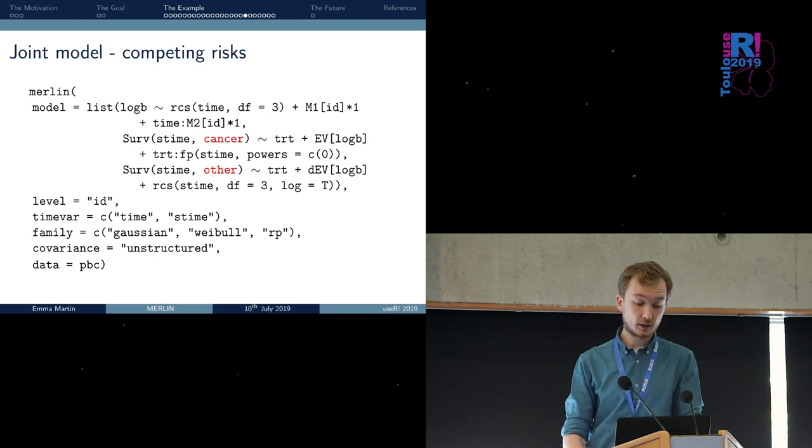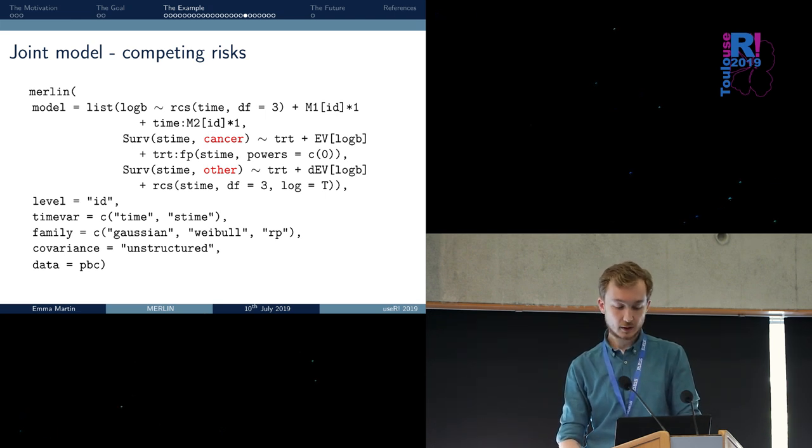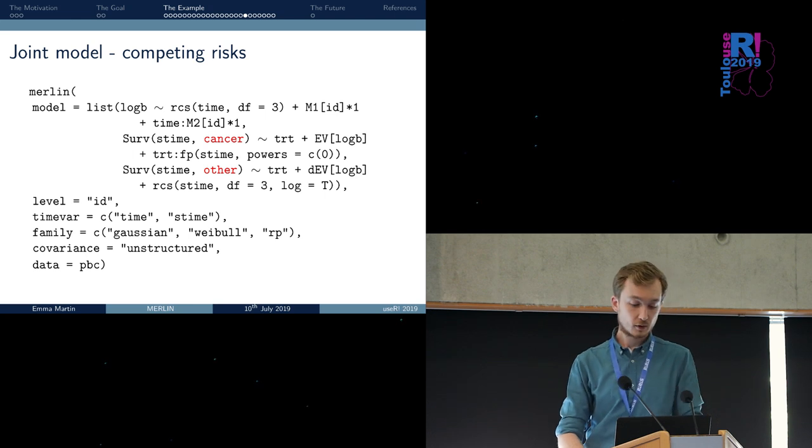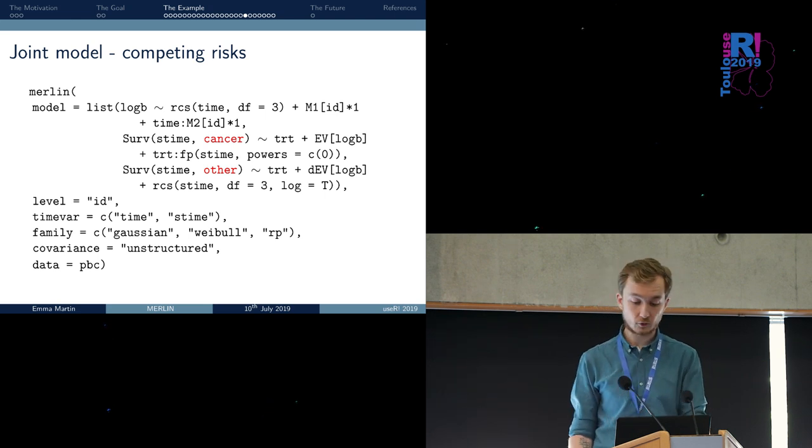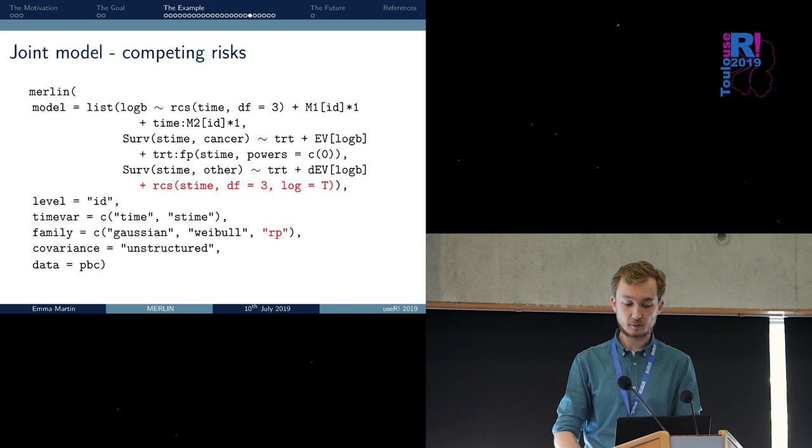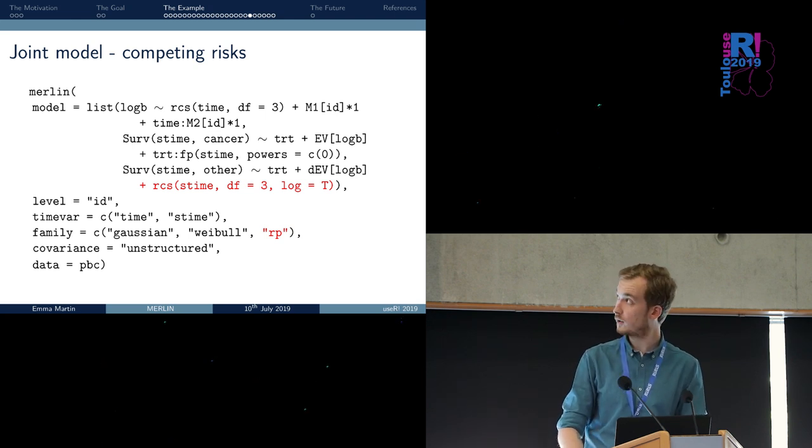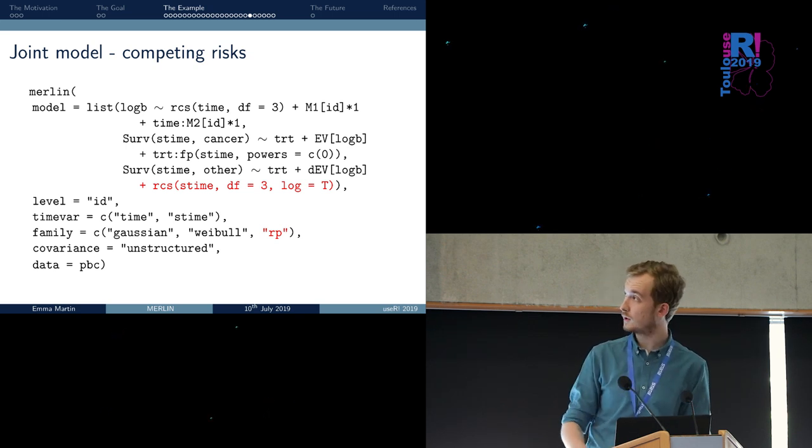We can also include competing risks. In this case, we are fitting two survival models. We have two equations, one for the risk of dying because of cancer, and one for the risk of dying for other reasons. On top of that, we decided that the risk of dying from other causes is modeled using a flexible parametric model, in which the baseline hazard is modeled using a restricted cubic spline. We assume three degrees of freedom for simplicity. We can define this by adding the family RP to the family option.